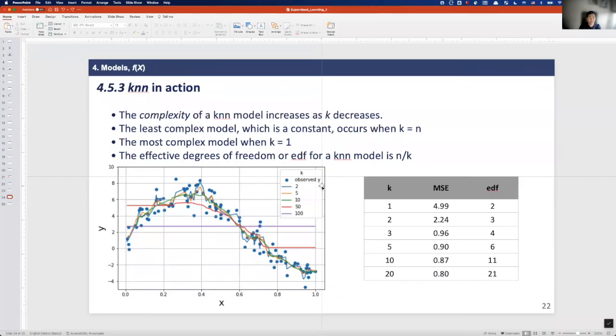Here I made five KNN models with different k values. The complexity of a KNN model increases as k decreases, and the least complex model, which is a constant, occurs when k is equal to N, and the most complex model occurs when k is equal to 1.